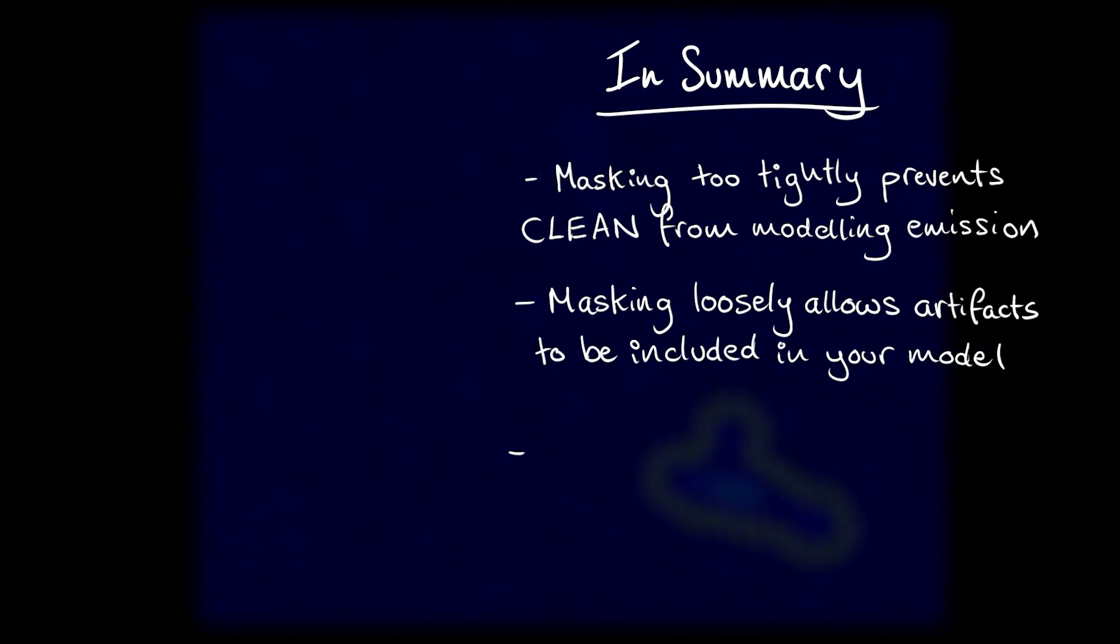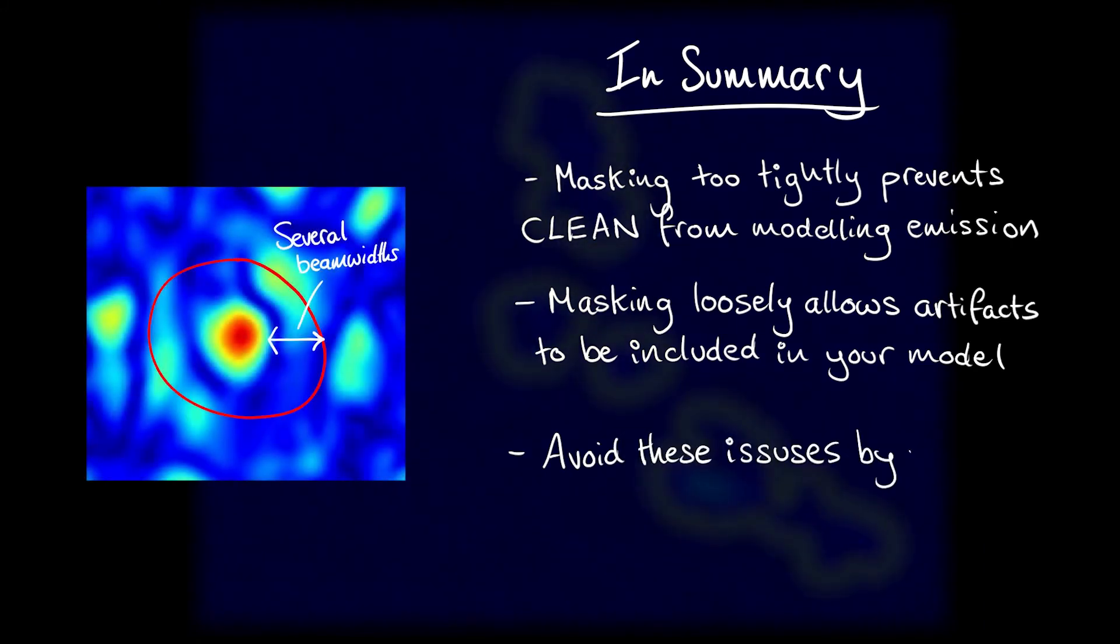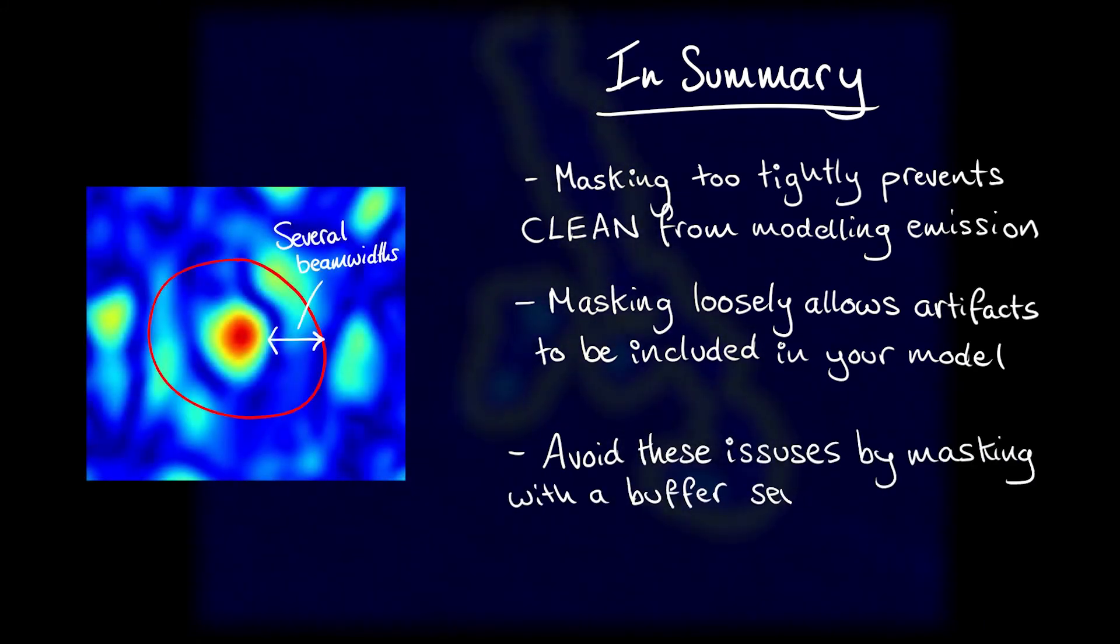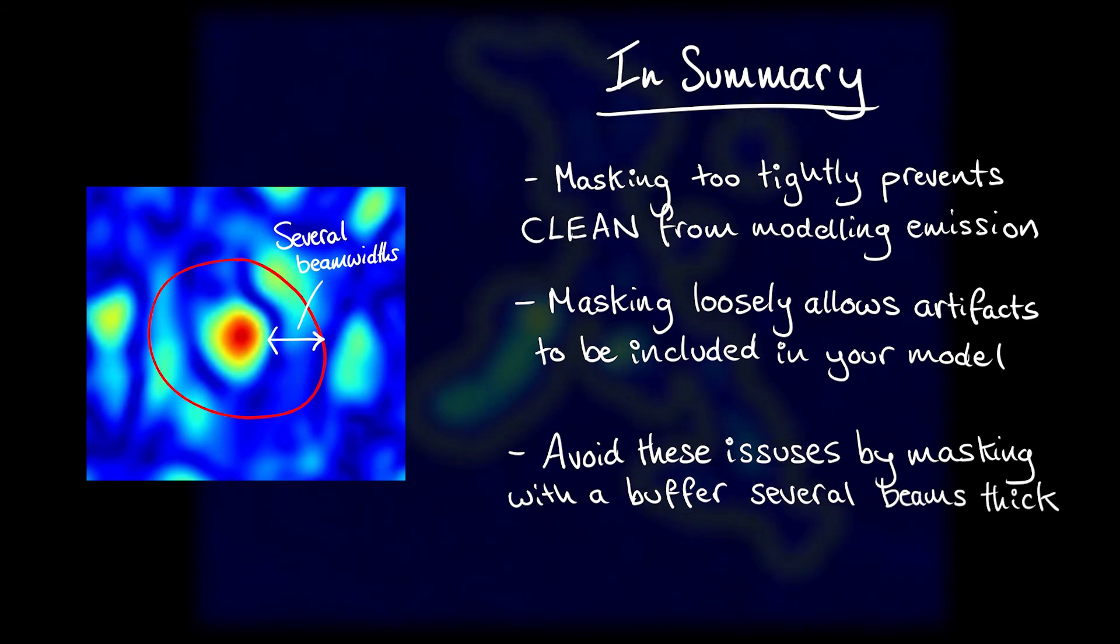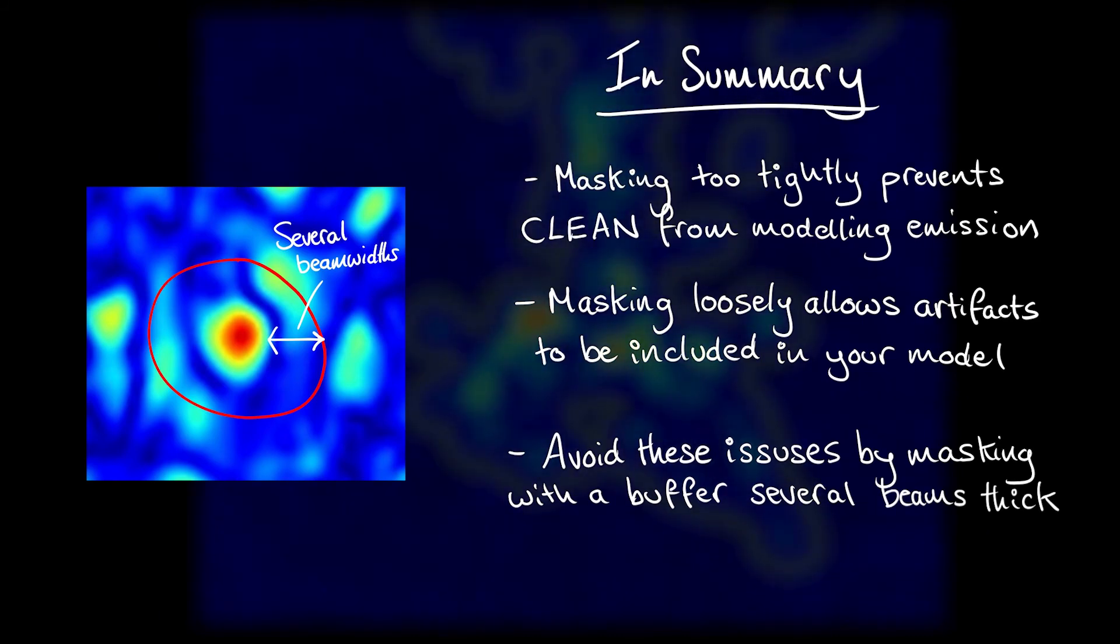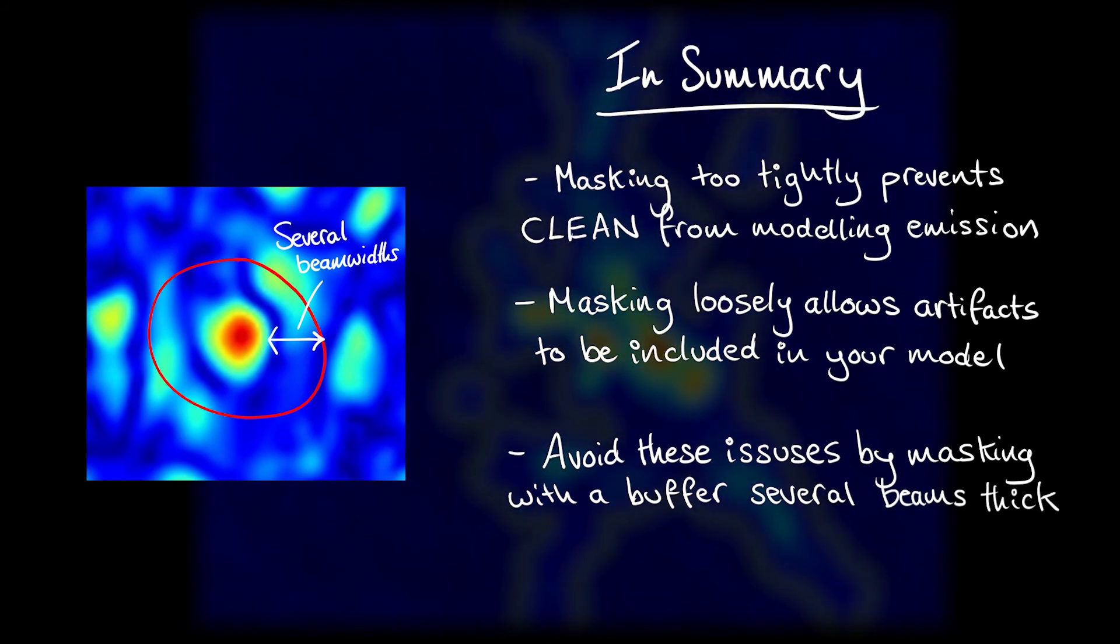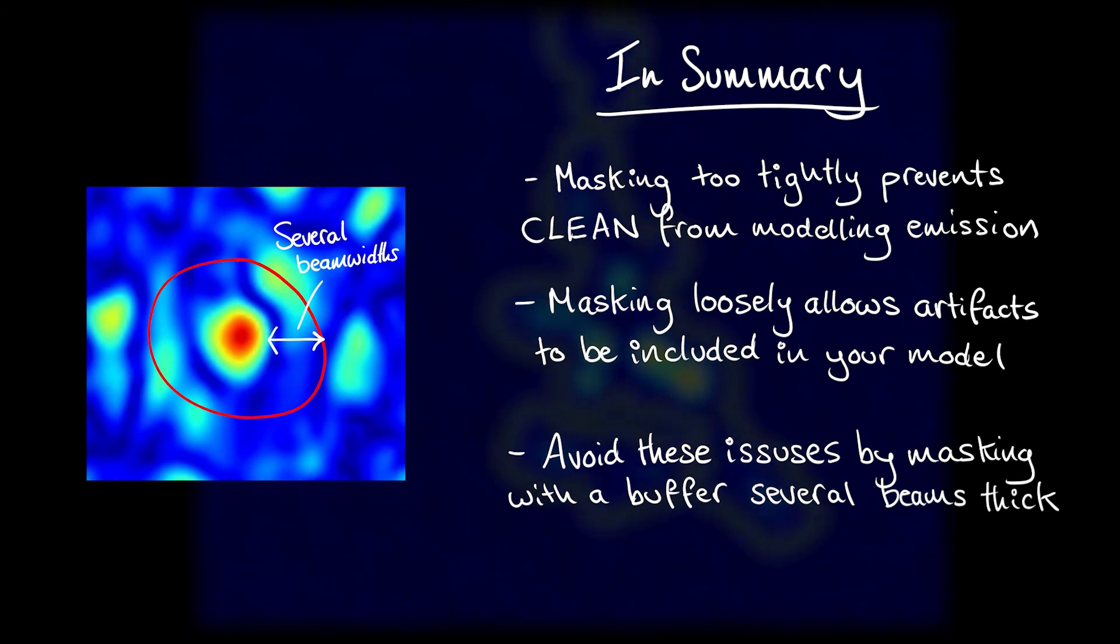To avoid this, just mask with a buffer a few beam widths wide around emission in your image, and remember that auto-masking algorithms like auto-multithresh exist to help you with complicated or tedious masking. Remember as well that you can change the mask after every major cycle.